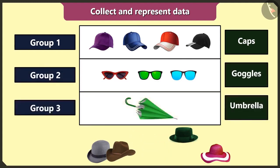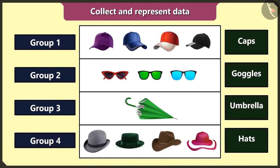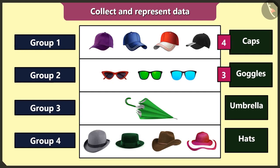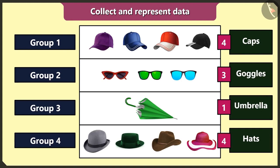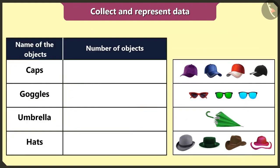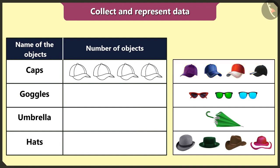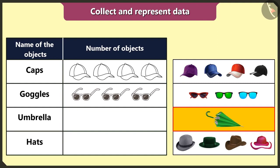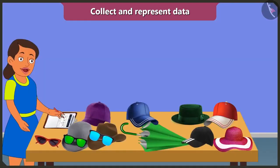As summer season is nearing, I will collect data about the number of caps, goggles, umbrellas, and hats that I have. I will make groups of similar objects: first group of caps, second group of goggles, third group of umbrellas, and fourth group of hats. I have four caps, three goggles, one umbrella, and four hats. I will create a table and draw pictures to represent the data.